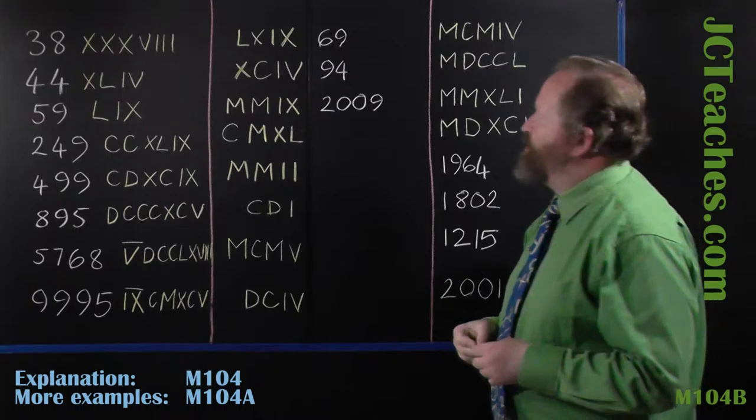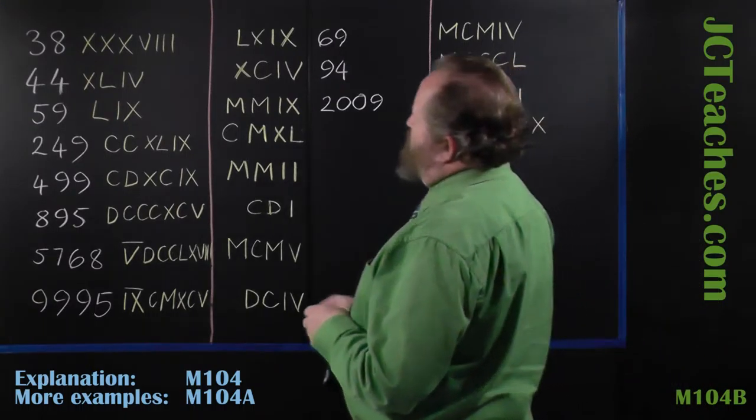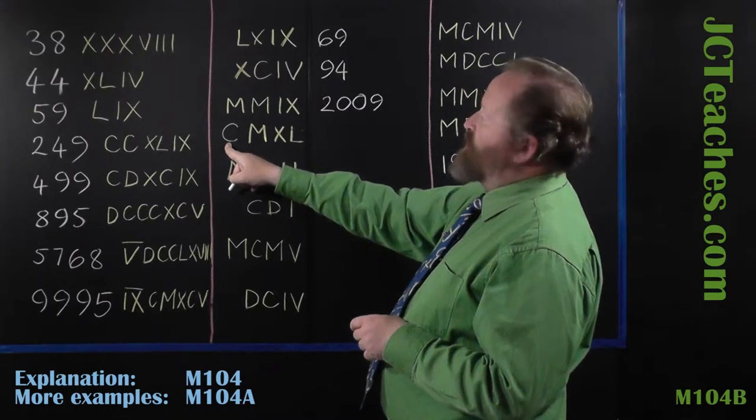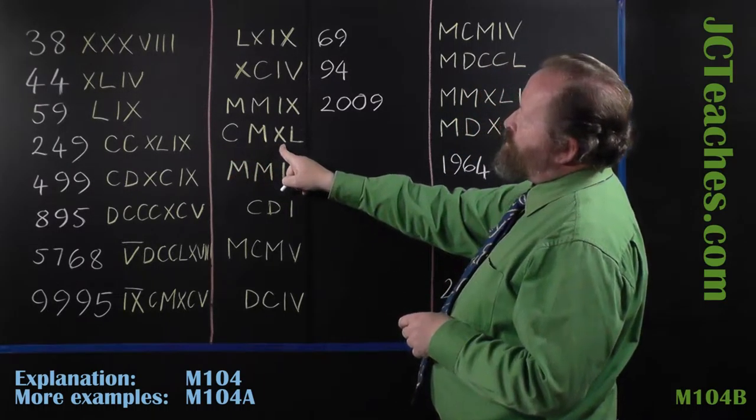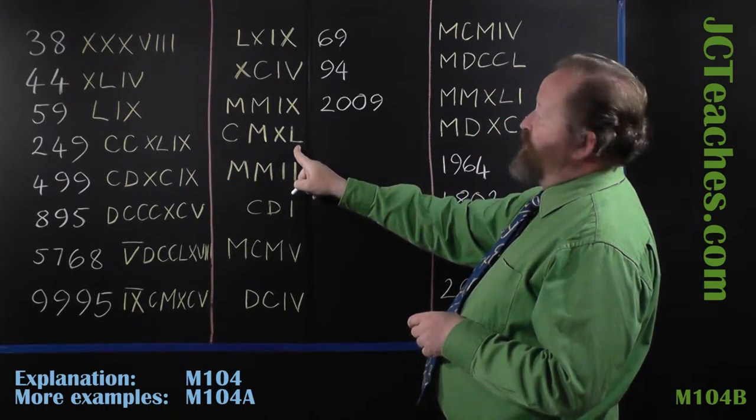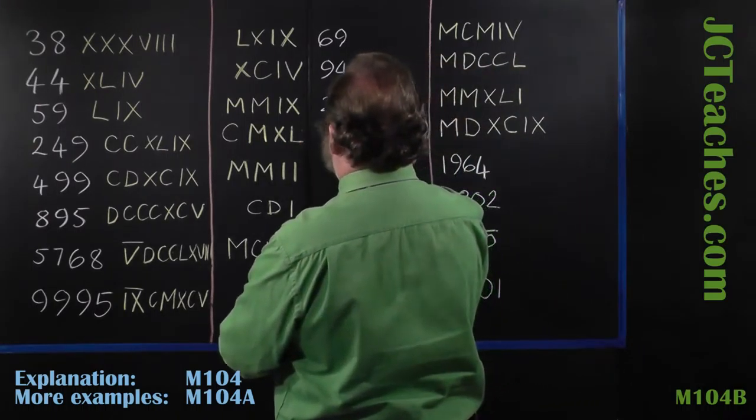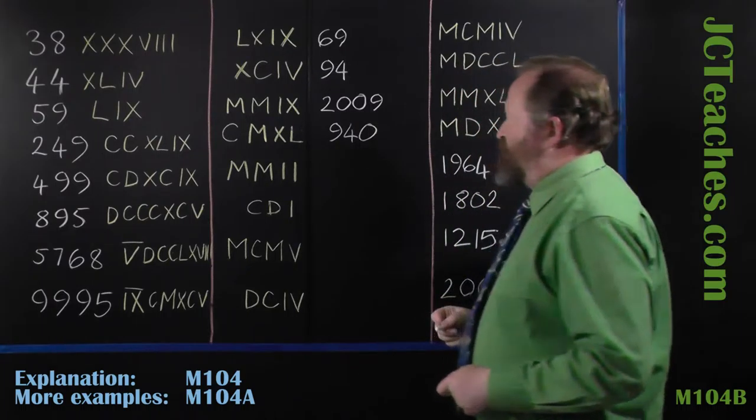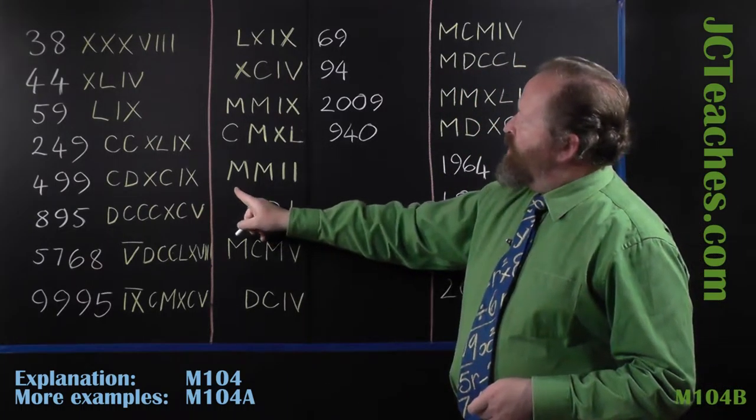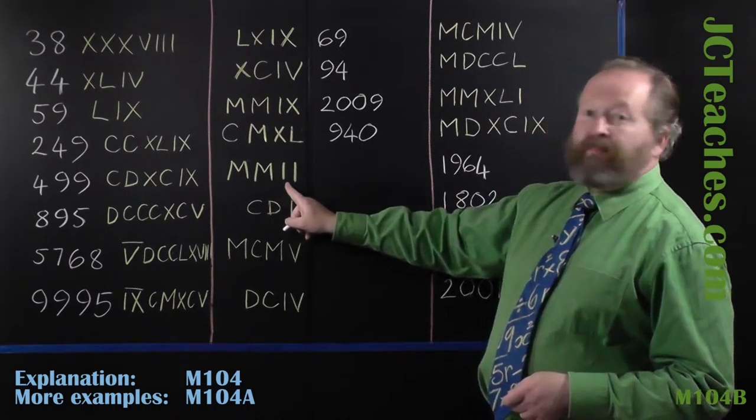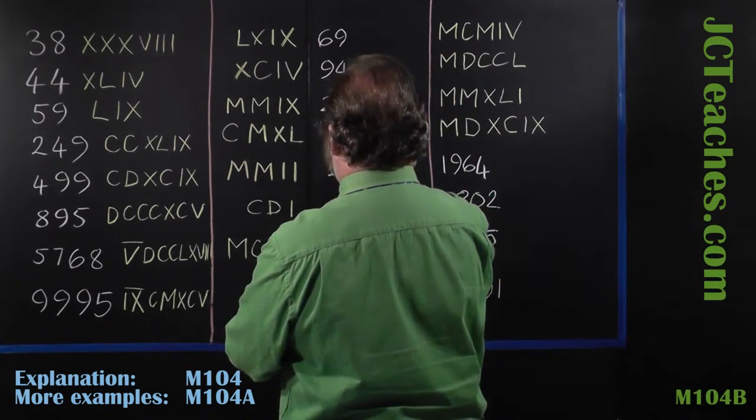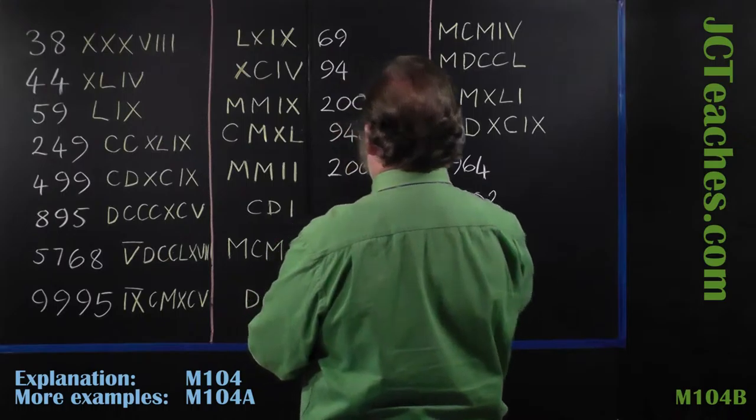Here we've got 1,000 minus 100, that's 900, and that's 40, so we've got 940. 1,000, 2,000, and 2, so this is 2,002.